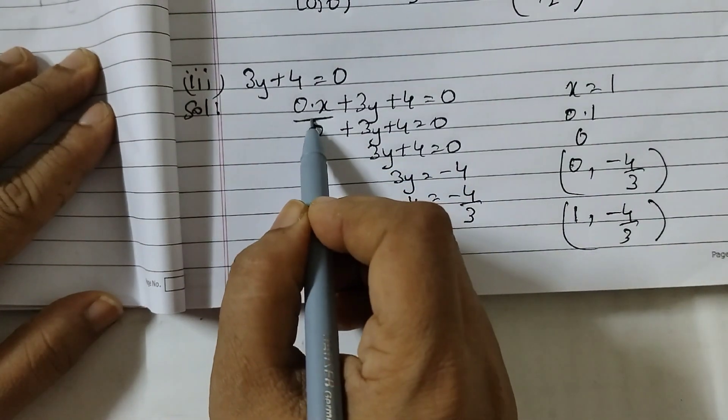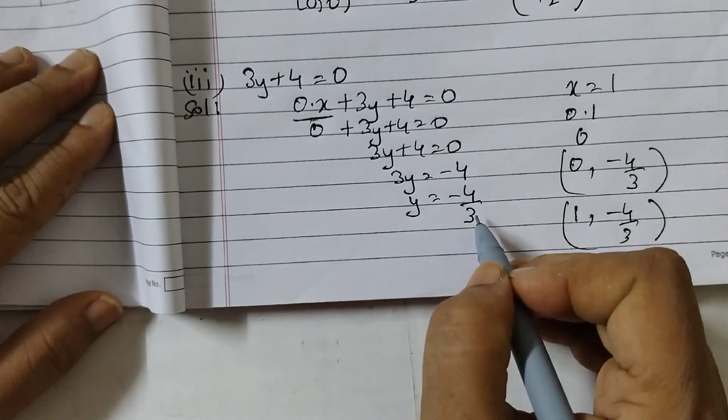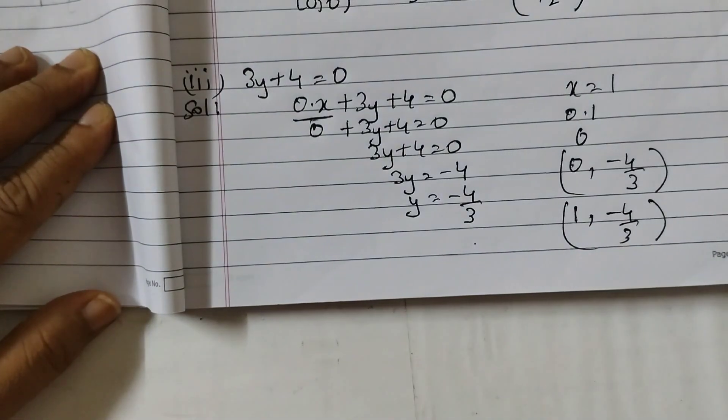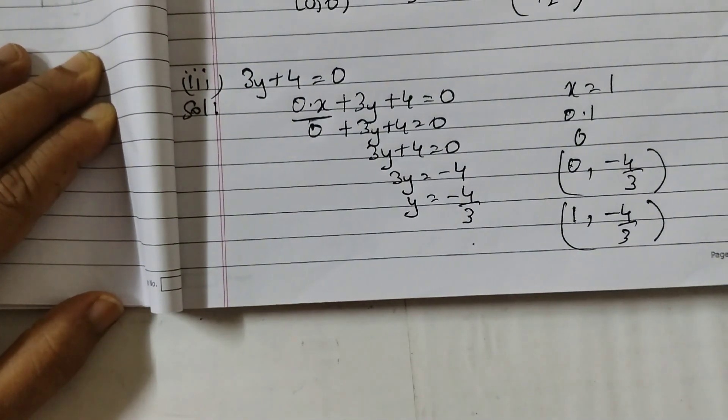So here we can write the solution is 0 comma minus 4 by 3. This could be one solution or 2 comma minus 4 by 3 because any value of x you take this term is 0. So the solution that you will get is minus 4 by 3. I hope this is clear to all. Thank you.